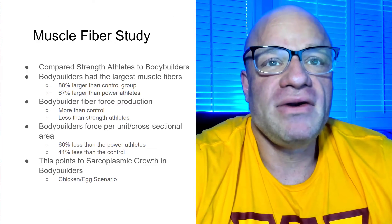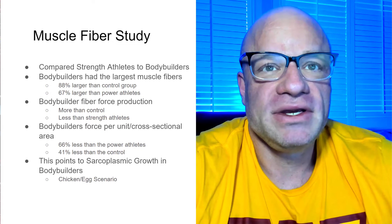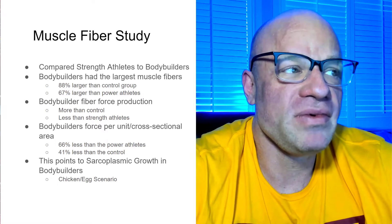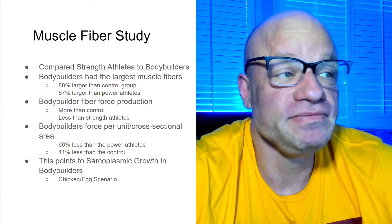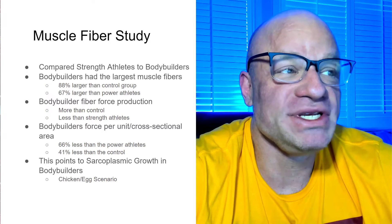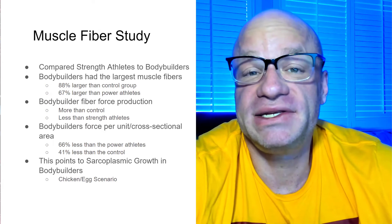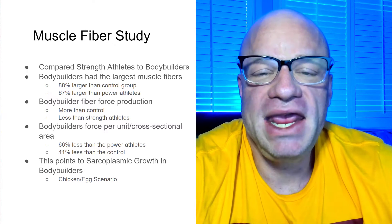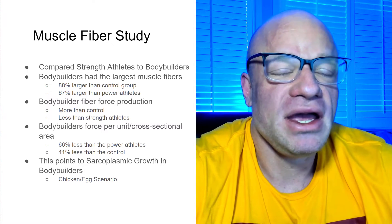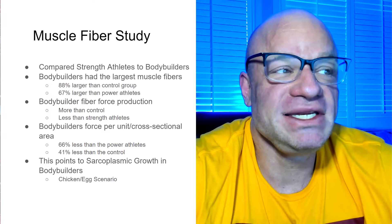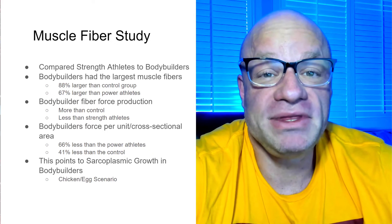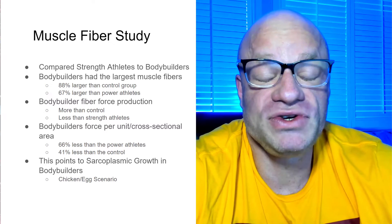There was a study done on bodybuilders versus strength athletes on muscle fiber composition. They compared both. The bodybuilders had the largest muscle fibers. Their actual muscle fibers were larger than the strength athletes, 88% larger than the control group. Holy shitballs, that is significant. So, they actually had 88% more stuff in their muscle fibers than the control group did. And 66% larger than the power athletes.